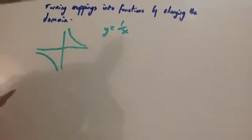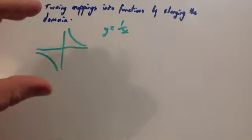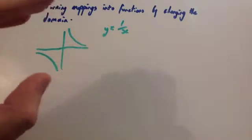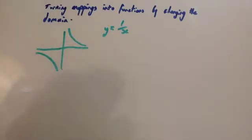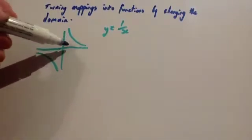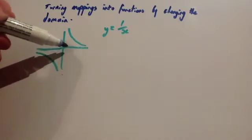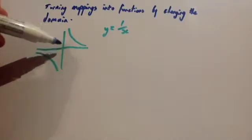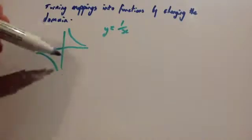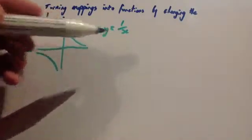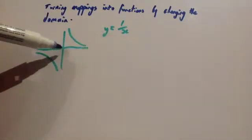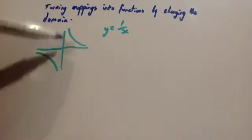Okay, let's look at turning mappings into functions by changing their domain. So in the previous video, we looked at the graph for y equals 1 over x. We thought, was that a function? And we said, well, every value of the domain, or almost every value of the domain, does map to one value of the range except for 0. 0 is an asymptote, because remember 1 divided by 0 you can't do. So there was no particular output or value for the range for that value.